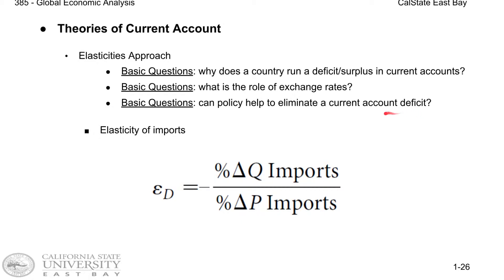The U.S. has constantly accused China of being a currency manipulator. China was basically deliberately making their currency relatively cheap in order to sell more stuff to the United States. So can we implement a counter policy to eliminate our trade deficit with China?